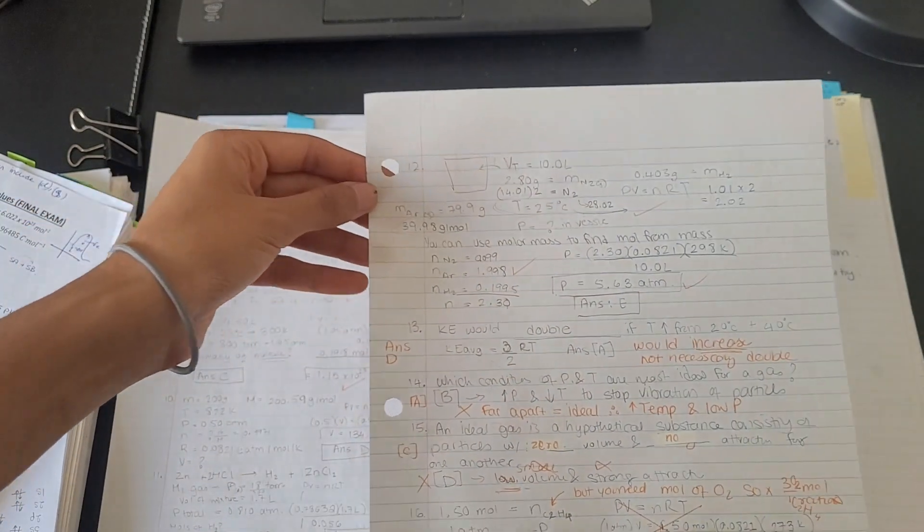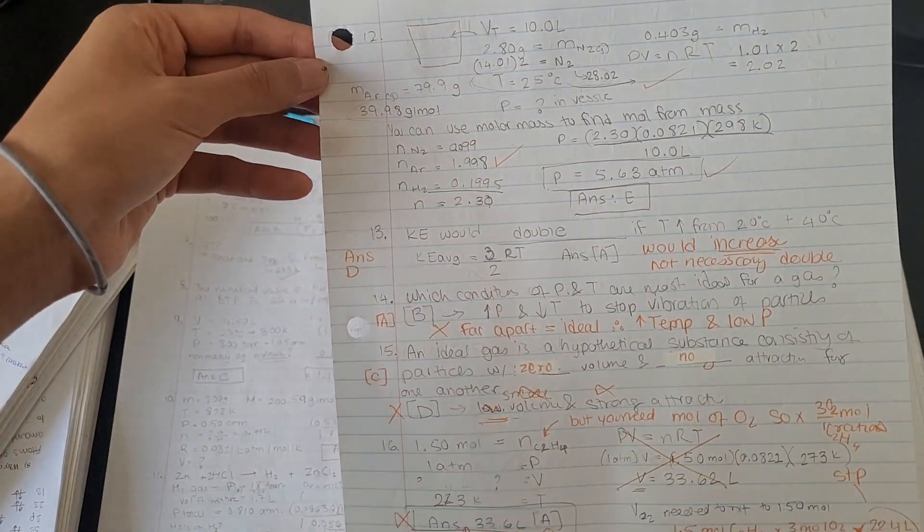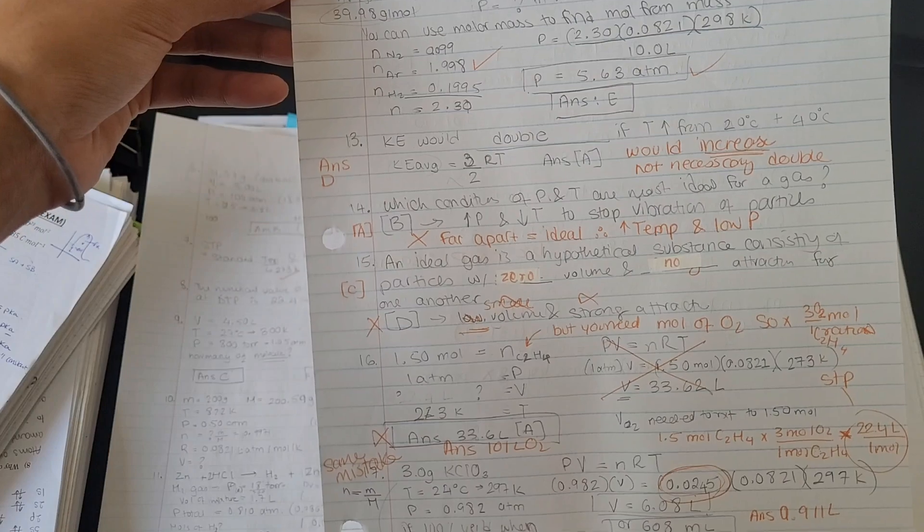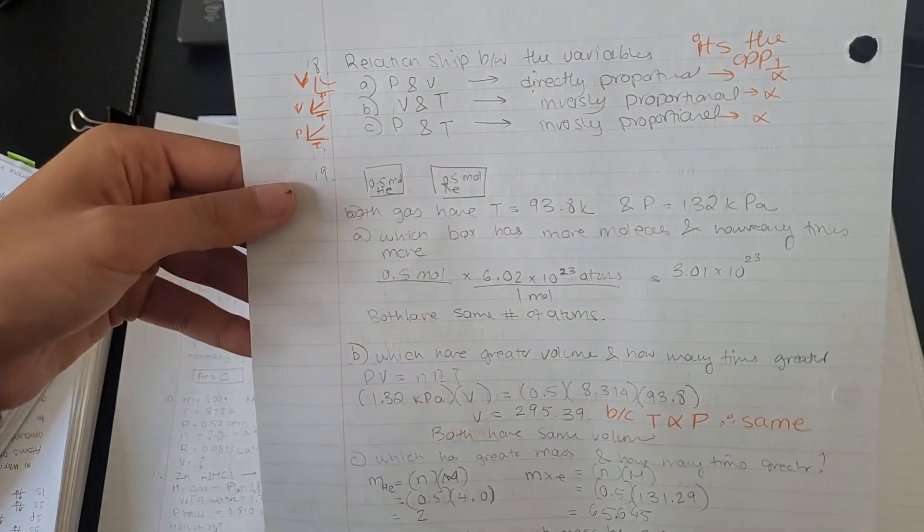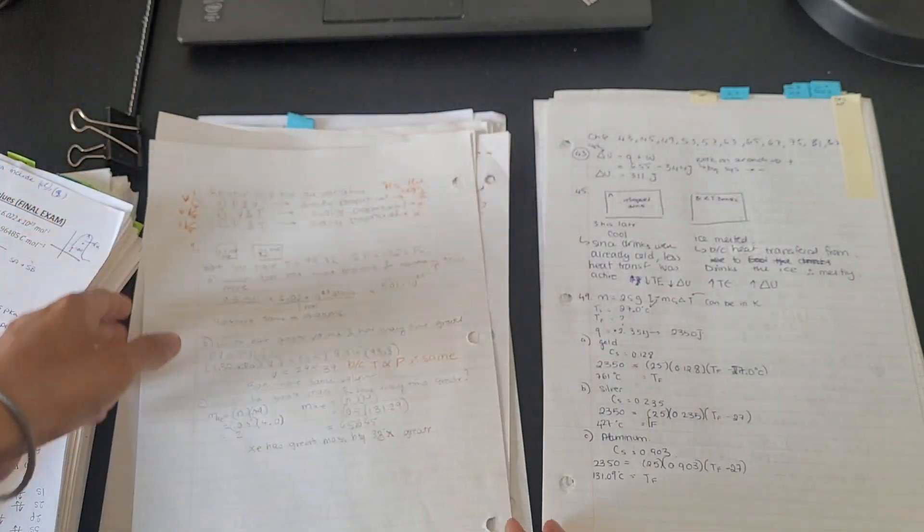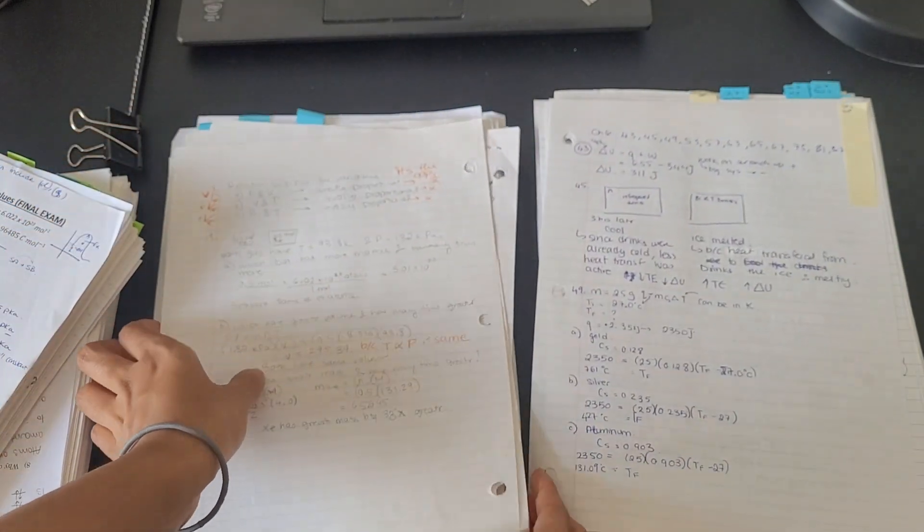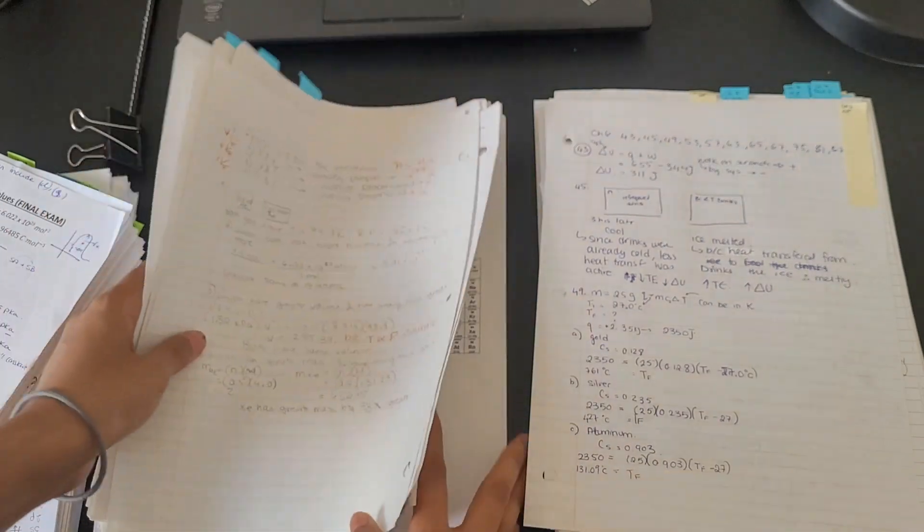Once I've practiced till my heart's content, I make a booklet of all those practice questions into one. I put the quizzes on top, and then after that, all the textbook questions that I solved, and sometimes even the redos that I've done. And this way, before the exam, I just have this booklet in my hand, and I review that, and I'm ready.